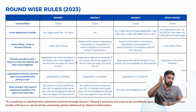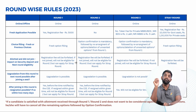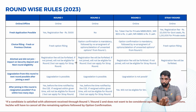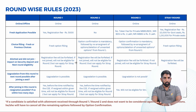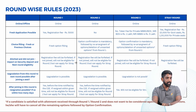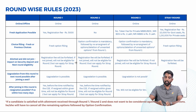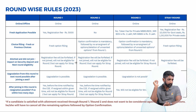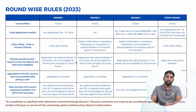After Round Two choices confirmation, the allotment will be published. If you don't join the seat, just like Round One, the registration fee will be forfeited and you will not be able to proceed to Round Three. However, you have the option to apply for the Stray Round as a fresh registration. Upgradation is possible from Round Two to Round Three — meaning you hold your Round Two seat while opting for a better seat in Round Three.